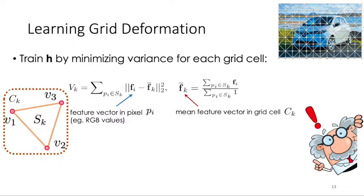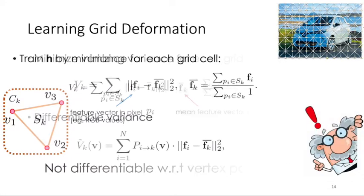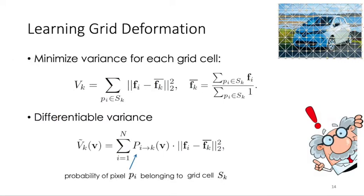However, this variance function is not differentiable with respect to vertex positions, and thus cannot be easily plugged into deep neural networks. Our solution is that we can softly assign each pixel to every grid with one probability, the pi to k here. And this probability assignment is a differentiable function of vertex positions.